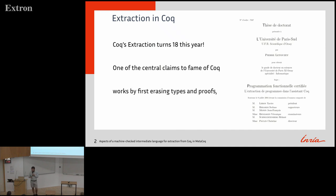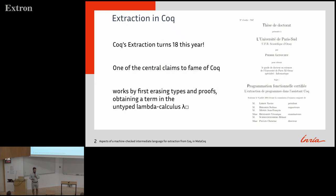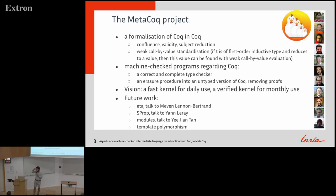Mathematically, it works by first erasing types and proofs into an untyped lambda calculus, which is called LambdaBox. It looks like the lambda calculus underlying the calculus of inductive constructions. The difference is that all the types are gone, and there's a box which says there was something computationally irrelevant — either a type or a proof — at this position before. And all of our work is carried out in the MetaCoq project.